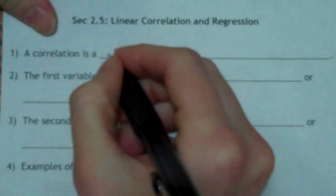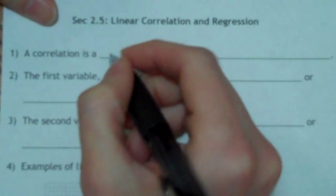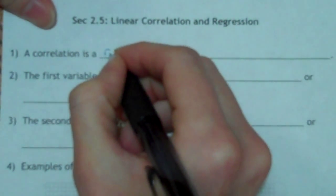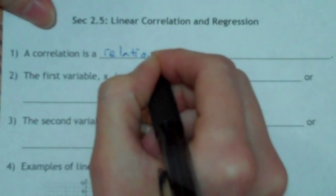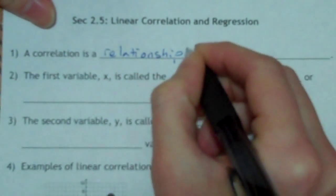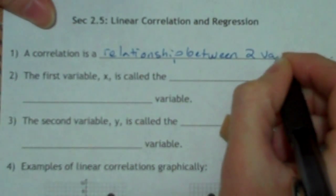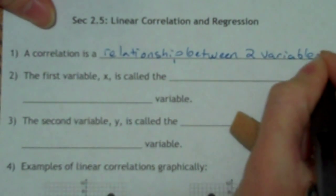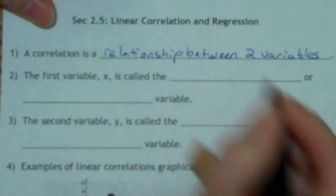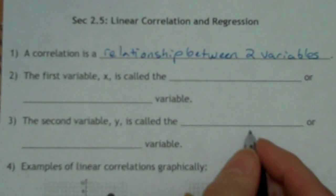First thing, a correlation is, and I'm sure a lot of you are yelling out the answer right now, a correlation is a relationship between two variables. And that doesn't mean that one variable causes the other one, it just means that the two are related to each other.